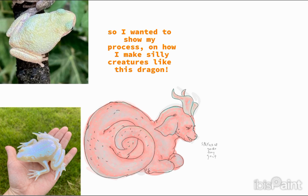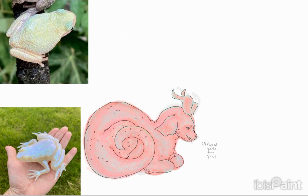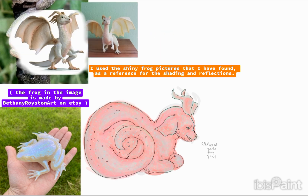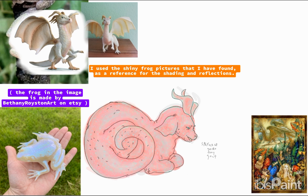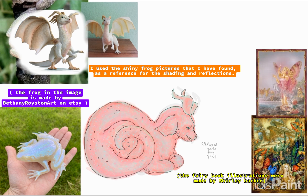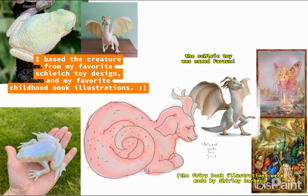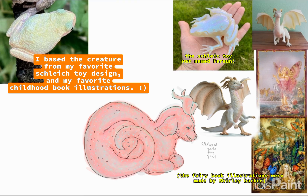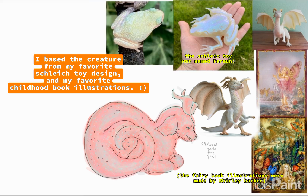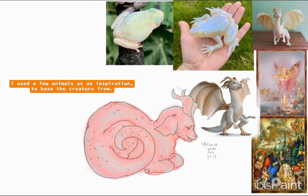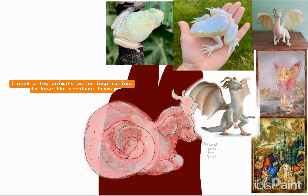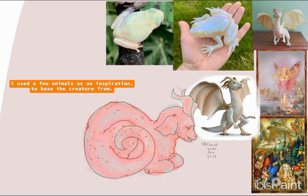So I want to show my process on how I make silly creatures like this dragon. I used shiny frog pictures that I found as a reference for the shading and the reflections. I based the creature from my favorite schlatoid design and my favorite childhood book illustrations. I used a few animals as an inspiration to base the creature from.